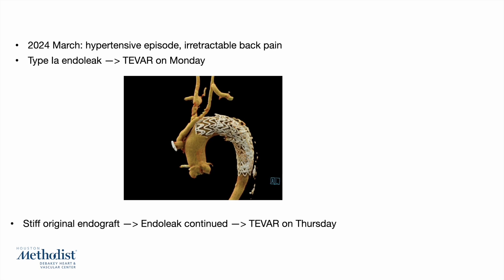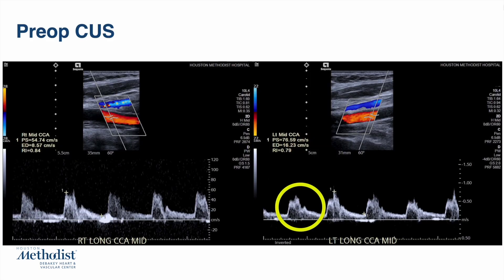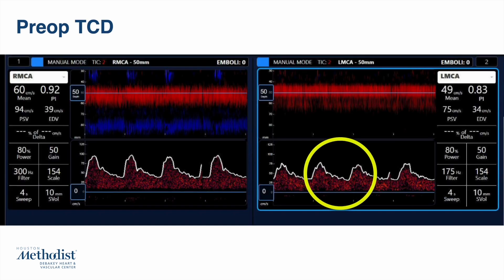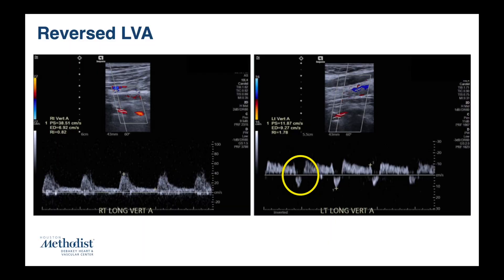A few days later, another T-VAR procedure with side graft placement was conducted with an even more proximal landing zone, which is what you are about to see. To further complicate the situation, carotid ultrasound showed a delayed systolic upstroke in the middle portion of the left CCA. CT imaging also showed a dampened waveform in the left MCA, and in the left vertebral artery a reverse flow pattern was seen.